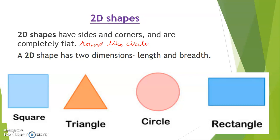You can see that in the square there are four sides. In a triangle there are three sides. Circle has no sides. It is round and round. Whereas a rectangle also has four sides.